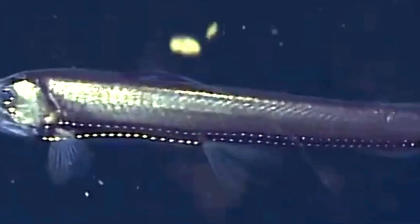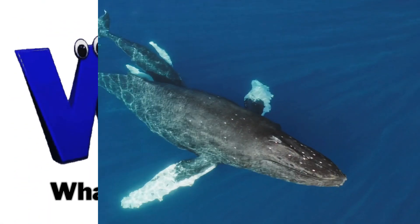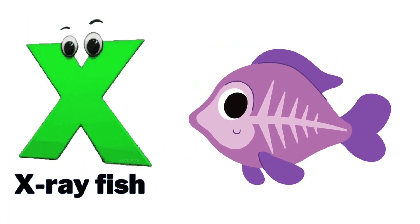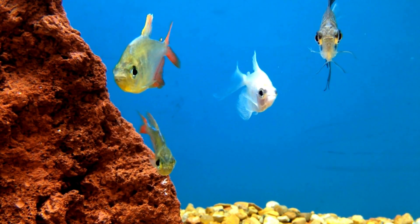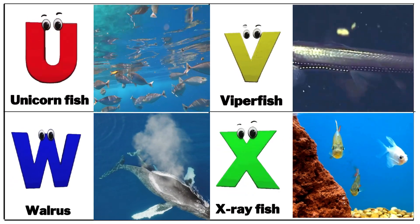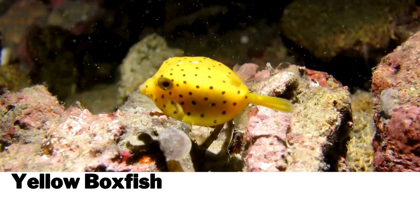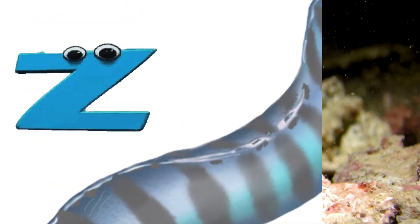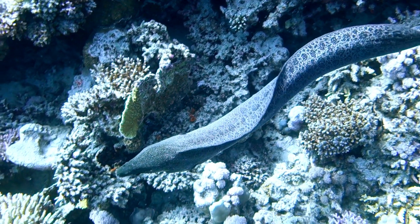W is for whale, whale. X is for x-ray fish, x-ray fish. Y is for yellow boxfish, yellow boxfish. Z is for zebra moray, zebra moray.